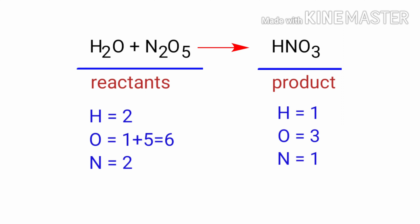In this equation the number of atoms at the reactants side are double to the number of atoms at the product side. So to balance the atoms we need to put a coefficient of two in front of the product.